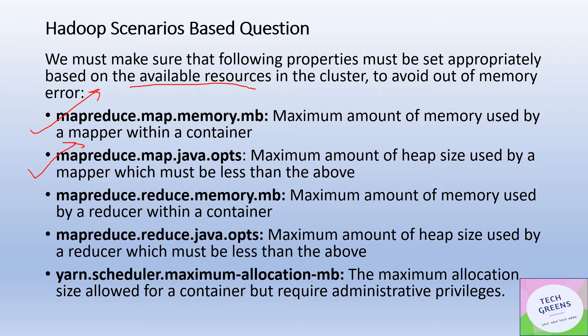The heap size defined by `mapreduce.map.java.opts` must be less than the total memory value from `mapreduce.map.memory.mb`, because the container runs within one JVM — the first property gives the total memory for that JVM, while the second limits the heap within it. You need to leave some memory for daemon processes and similar tasks. On the reducer side, there is a corresponding property: `mapreduce.reduce.memory.mb`.